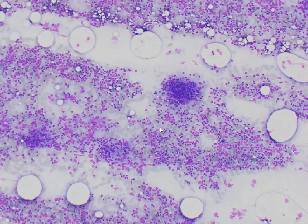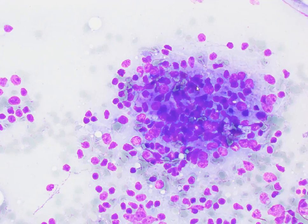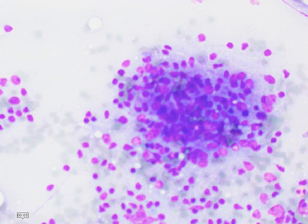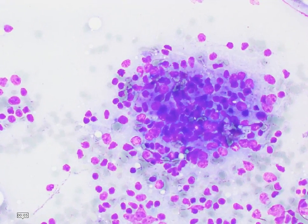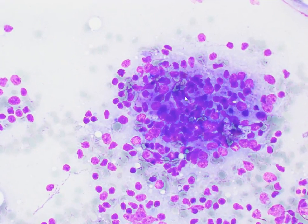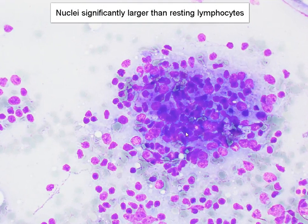There are actually not that many lymphocytes in the background. Now focusing on a group such as this, moving up and down into different planes of focus, we can see that it is composed of fairly large cells, and when you compare them to lymphocytes, they are probably around three to five times the size of lymphocytes.